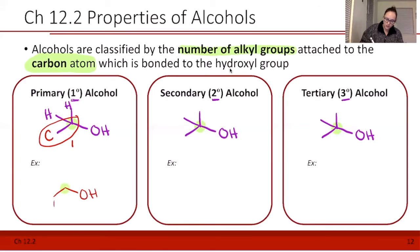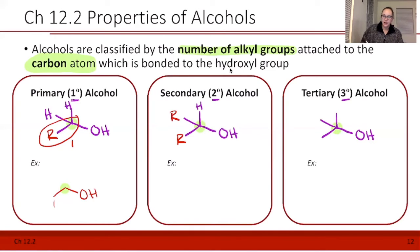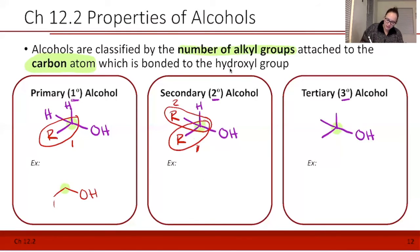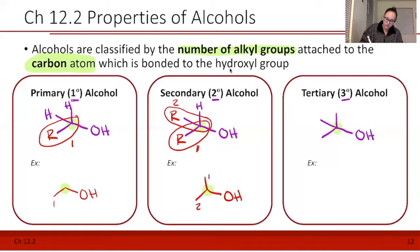A secondary alcohol has two carbons. Instead of a carbon, let's use R to stand for whatever else is there. When we have a secondary alcohol, we have two R groups and one hydrogen connected to that carbon — so one, two. An example of this would be isopropanol. When we look at the carbon that the alcohol is connected to, I'm going to highlight it and you can see there are two other carbons attached to that carbon.